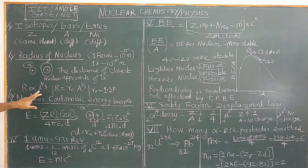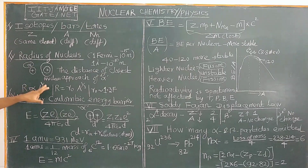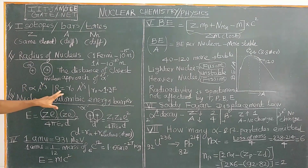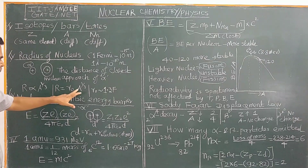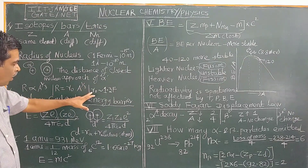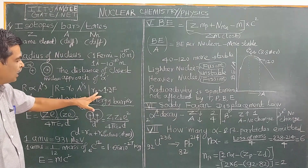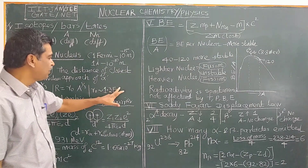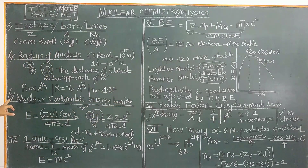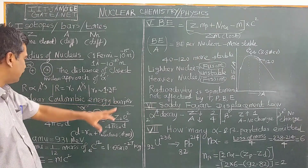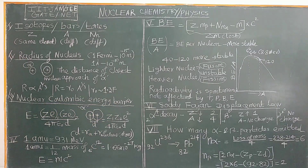The radius of the nucleus is directly proportional to the mass number to the power one-third. Therefore, the radius R = R₀ × A^(1/3), where R₀ is a constant of proportionality, roughly equal to 1.3 femtometers. Next, let us discuss the nuclear Coulombic energy barrier.